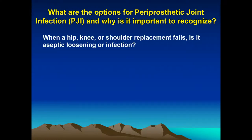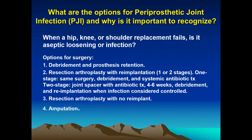Although joint replacement therapy is one of the most successful operations in the United States, implants do ultimately fail. When they fail, the surgeon often wants to know whether the failure is due to aseptic loosening or an infectious process, because they have different surgical options depending on the cause.